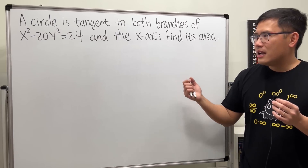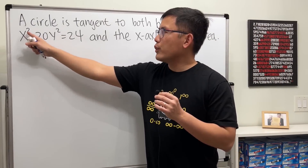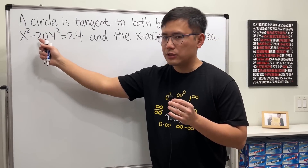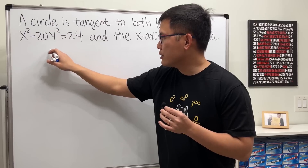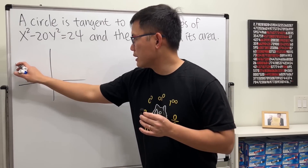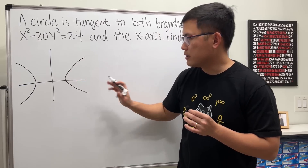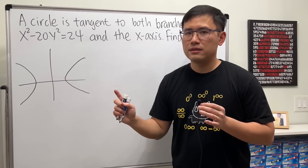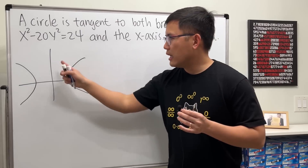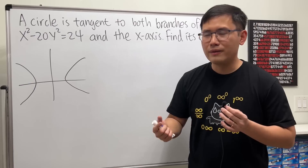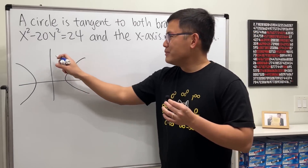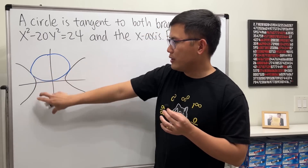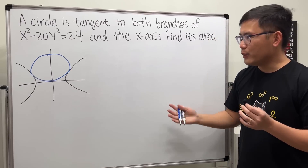Here's the problem: we have the hyperbola x² − 20y² = 24, which is a left-right branch hyperbola centered at the origin. A circle is tangent to both branches of the hyperbola and also tangent to the x-axis. Our goal is to find the area of the circle. There are two possible positions — the circle can be above or below the x-axis — but by symmetry they have the same area, so I'll just find the one above.